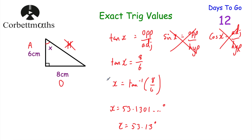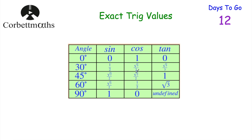So we've just had a look at two questions, and for both of those you will have had to use your calculator. Now what if trigonometry comes up on a non-calculator paper? It can be useful to know some exact trig values. So: sin(0°) = 0, sin(30°) = 1/2 or 0.5, sin(45°) = √2 / 2, sin(60°) = √3 / 2, and sin(90°) = 1.